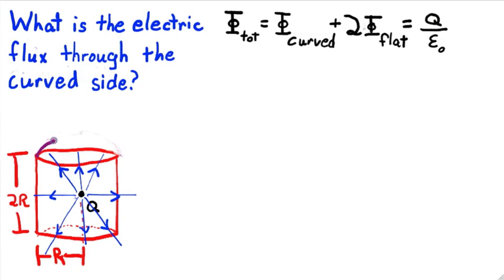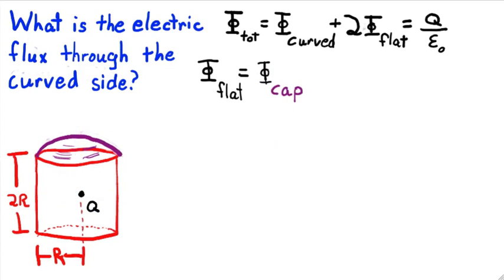I invite you to compute the flux out of the flat end directly, but I'm going to change the computation a little to make it easier. Consider this curved surface, which caps off the cylinder. Each electric field line piercing the flat end also pierces the cap, and vice versa. That's one way to see that the flux through the flat end is equal to the flux through the cap. Okay, let's remove the field lines now because they clutter the drawing.